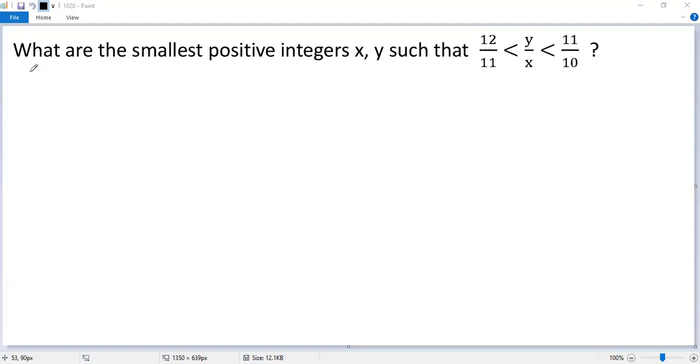So we get 12 over 11 minus 1 less than y over x minus 1 less than 11 over 10 minus 1. So we get 1 over 11 less than y minus x over x less than 1 over 10.